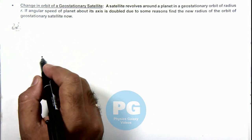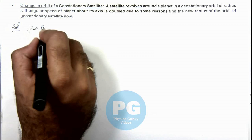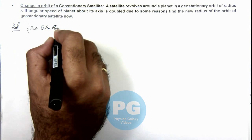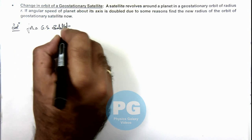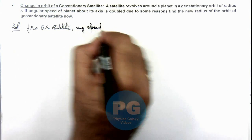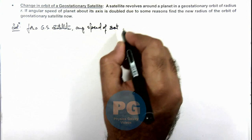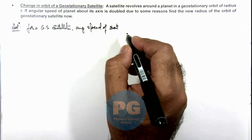In this situation, for a geostationary satellite, the angular speed of the satellite must be equal to the angular speed of revolution of the planet.